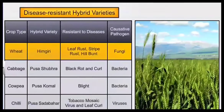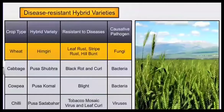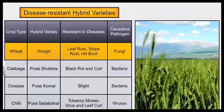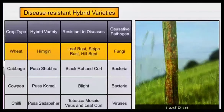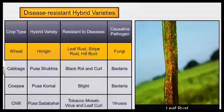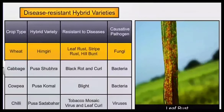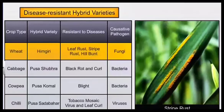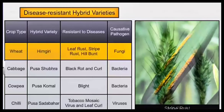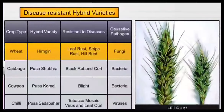The first one is Himgiri, a variety of wheat which is resistant to fungal diseases like leaf rust, stripe rust, and hill bunt.